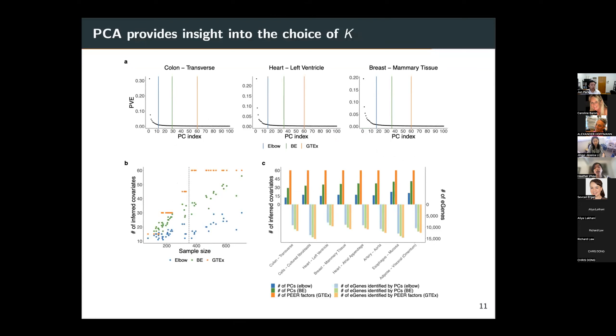HCP provides insight into the choice of K or the choice of the number of hidden covariates. In general, choosing K, which generally can be interpreted as the number of clusters or the number of groups, is a difficult task. But PCA still provides convenient ways of choosing K based on the concept of the proportion of variance explained, or PVE, of the data. Examples of these methods include the Elbow method, or there's this algorithm called the BE algorithm developed by authors named Buja and Eyuboglu in 1992.